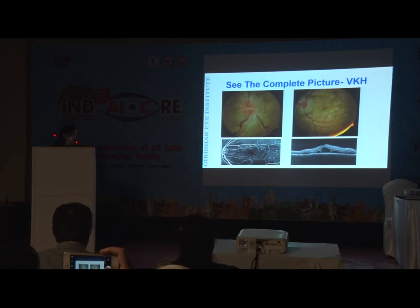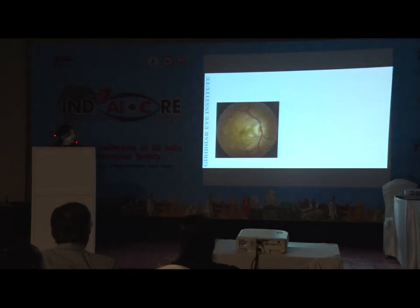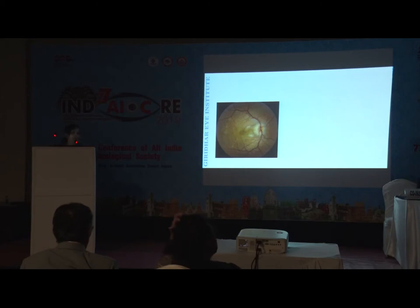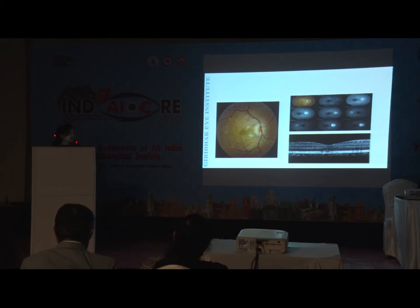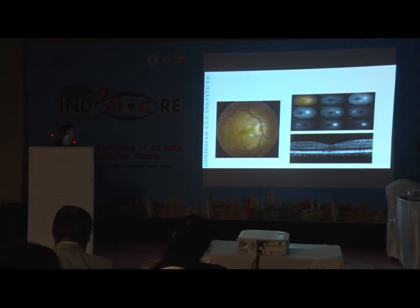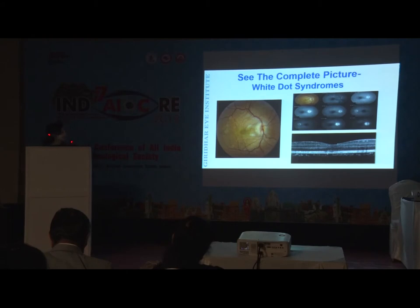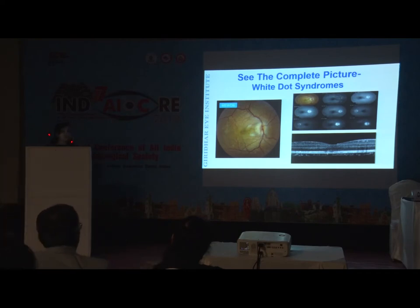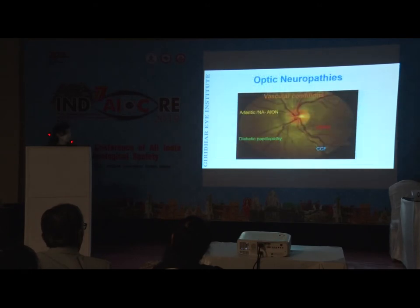Again, a case may look like optic neuritis, but apart from disc edema you can see tiny gray-white flecks in the posterior pole and a granular appearance of the fovea. The patient presents with defective vision and RAPD, but ancillary investigations reveal disruption of outer retinal layers on OCT and a characteristic wreath-like hyperfluorescence on FFA. This is Multiple Evanescent White Dot Syndrome (MEWDS) — a transient condition not requiring treatment, but correct diagnosis is essential.